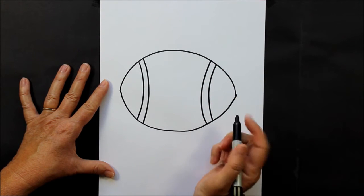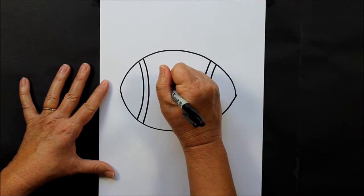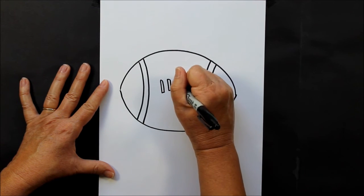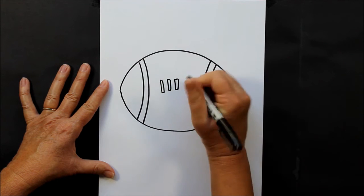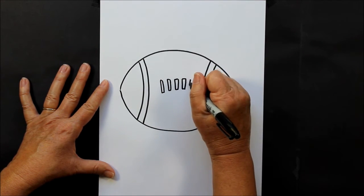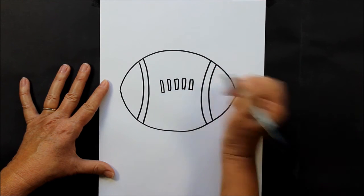In the middle of our football, we are going to make some lines, double lines that are closed up at the ends. So just put as many as you'd like, as many that will fit in your football. I'm going to put five.